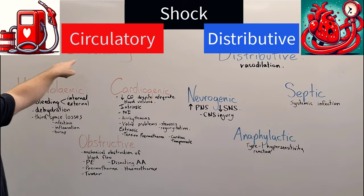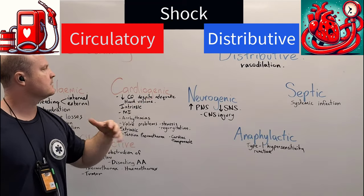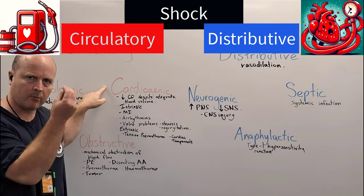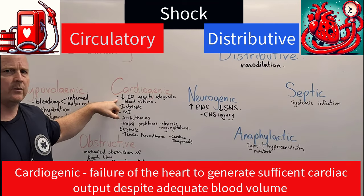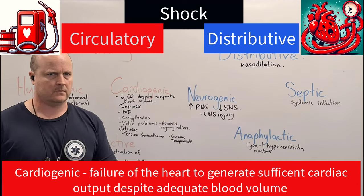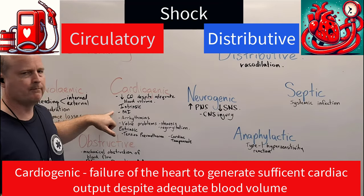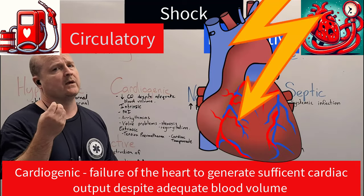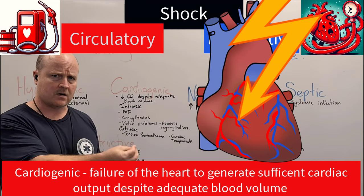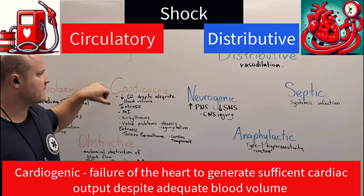Next, the pump — cardiogenic shock. Cardio means heart, genic means creation, so cardiogenic shock is shock created by a problem with our heart, our pump. This is decreased cardiac output despite an adequate blood volume. It could be intrinsic to the heart itself, such as a myocardial infarction — when part of the heart is infarcting or dying. Dead meat doesn't beat, so this can lead to cardiogenic shock.